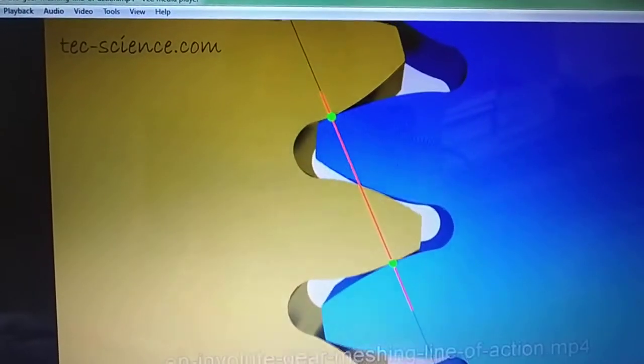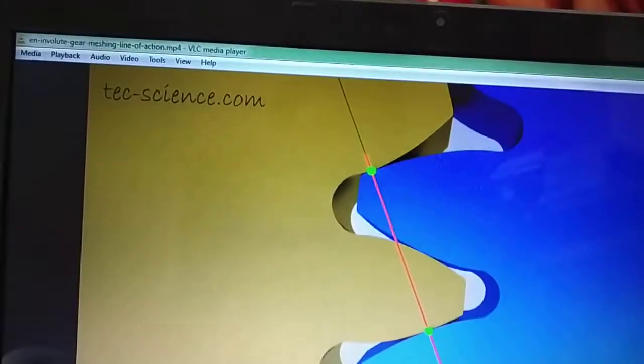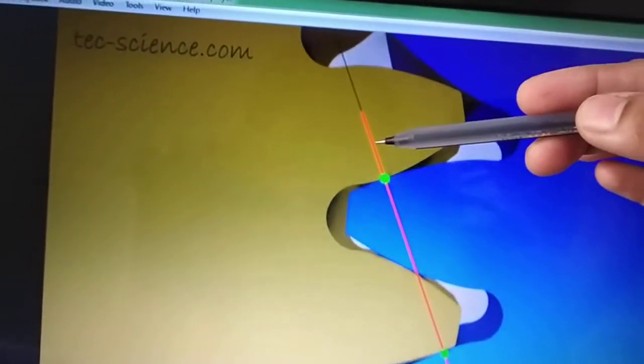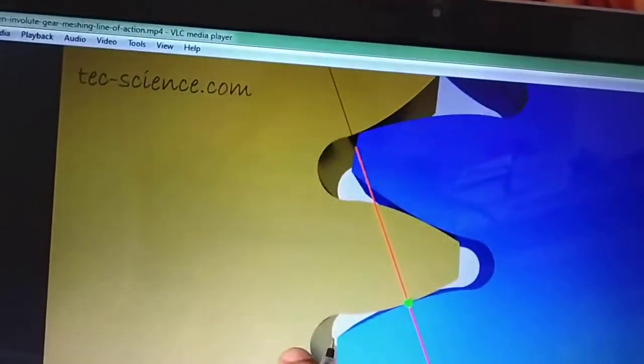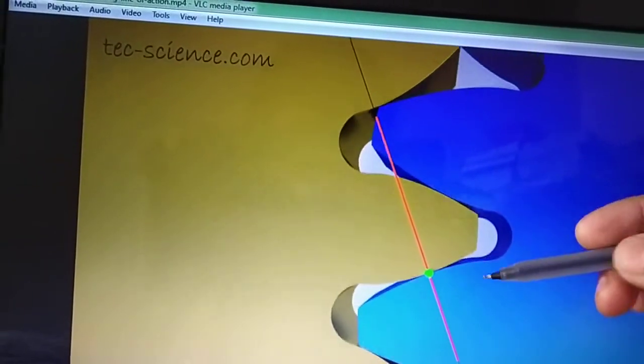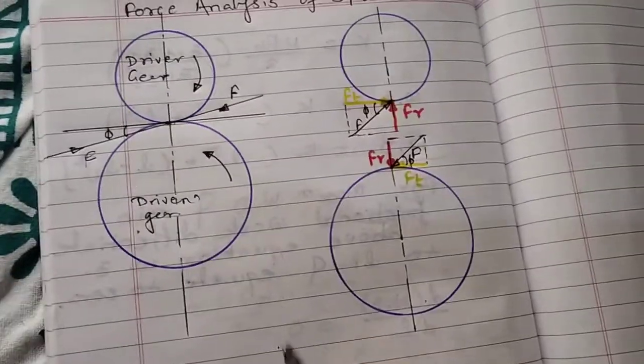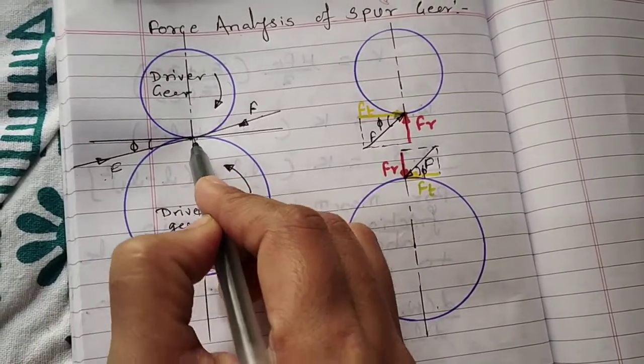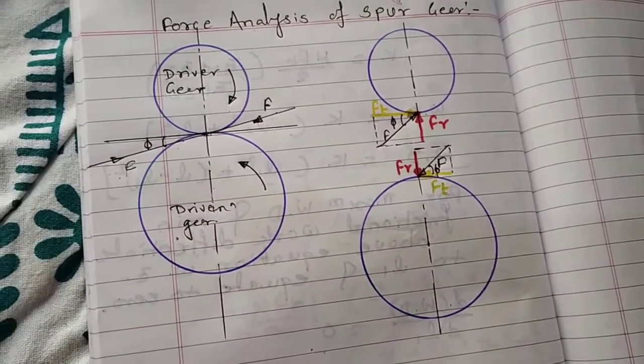As you can see in this animation, when the driver exerts force on the driven gear, it is along the common normal at the point of contact. As the driver exerts force, power and motion is transmitted from the driver to the driven. The driven also exerts equal and opposite force on the driver gear. Here is the normal force exerted by driver to driven and equal and opposite force exerted by driven on driver.